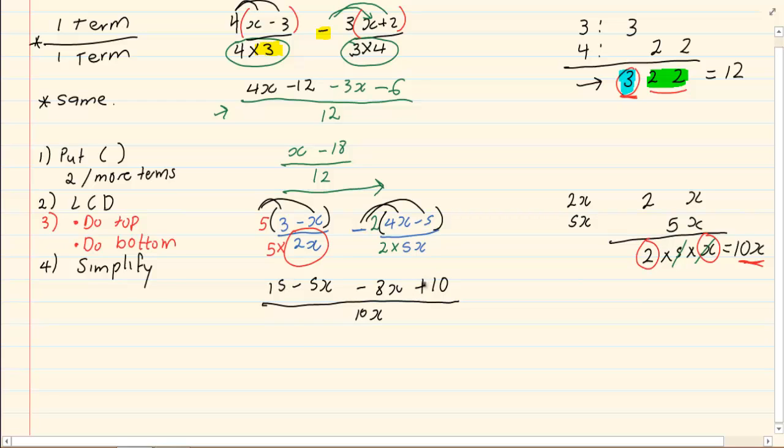15 plus 10 is equal to 25, minus 5x minus 8x is minus 13x, all over 10x.